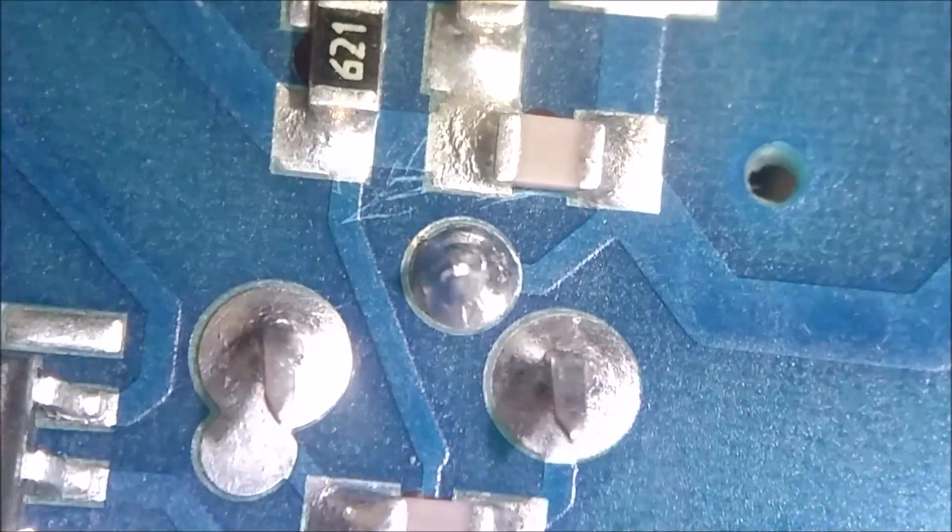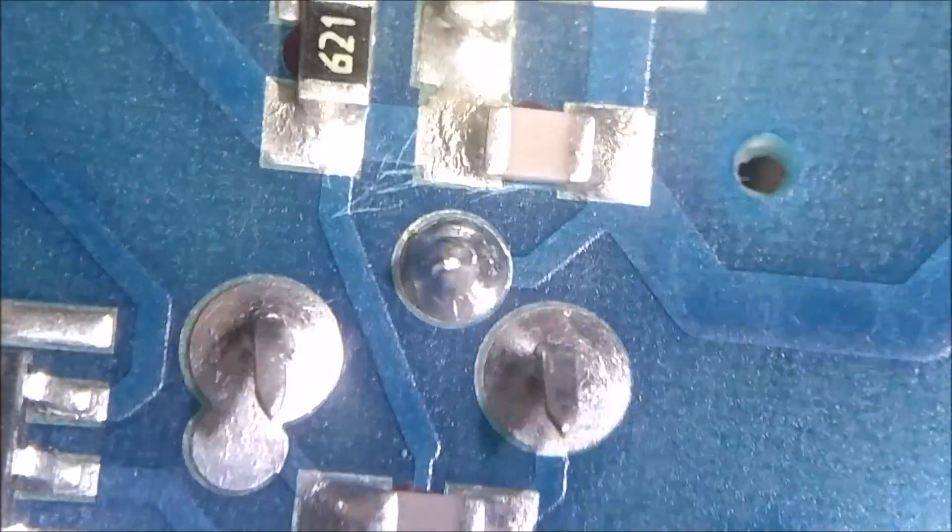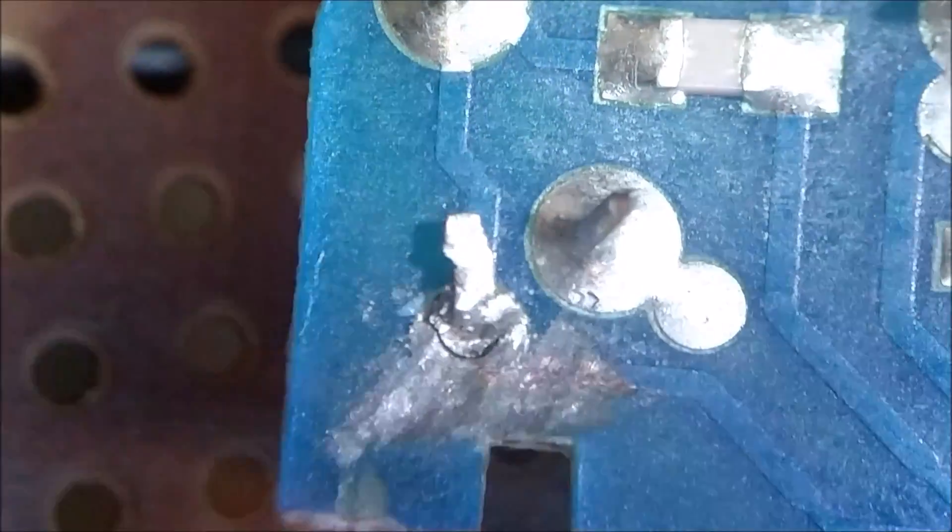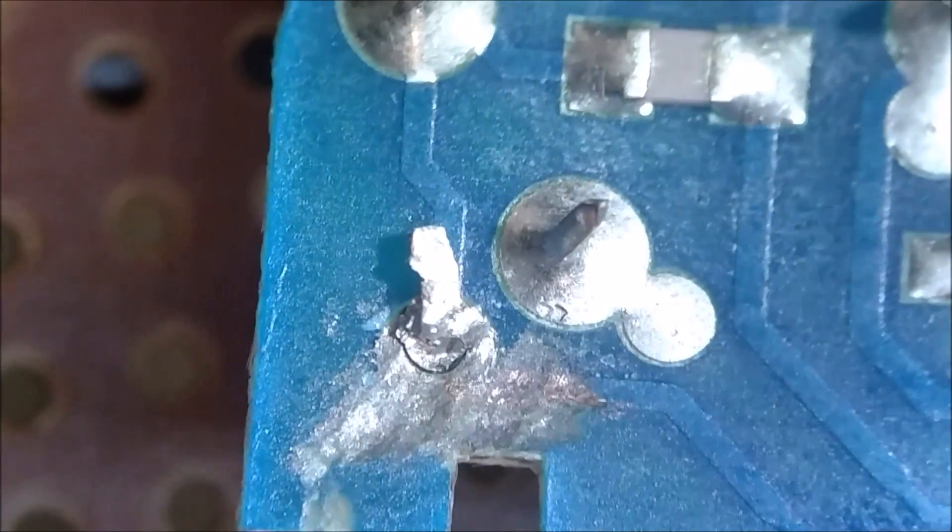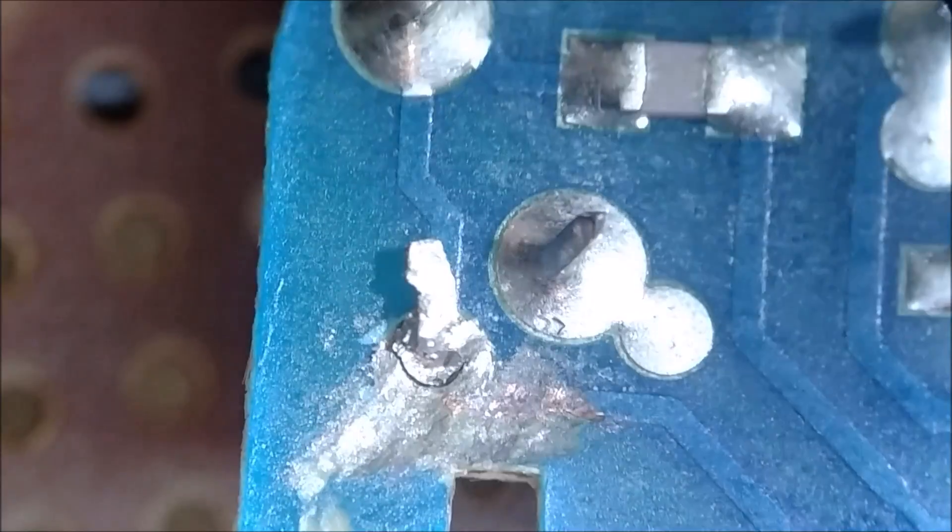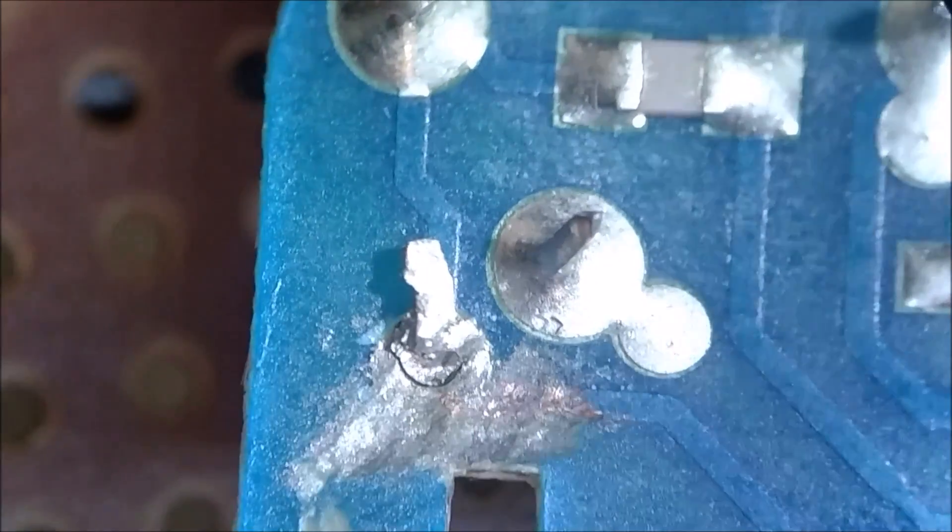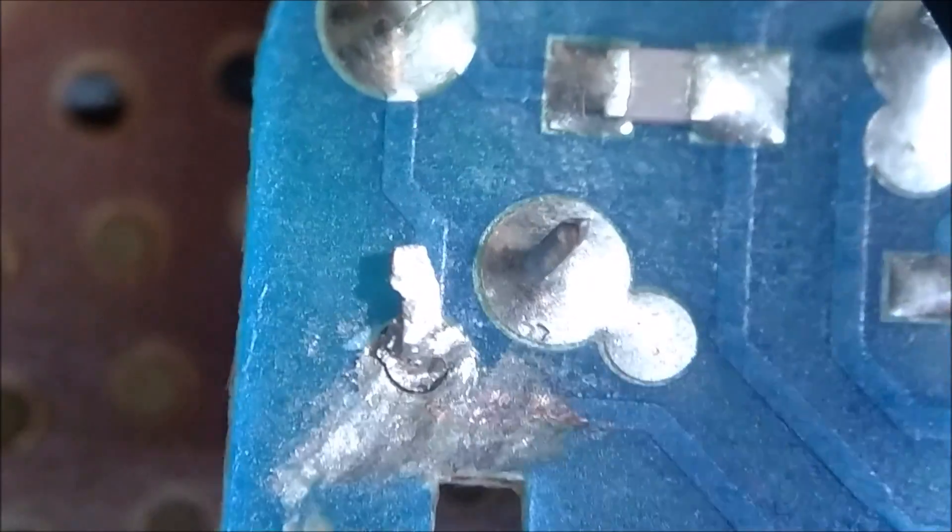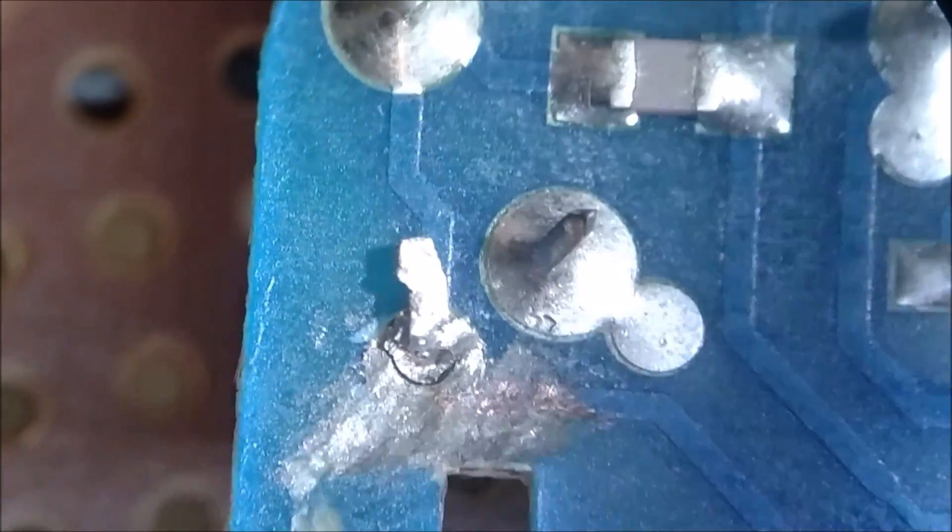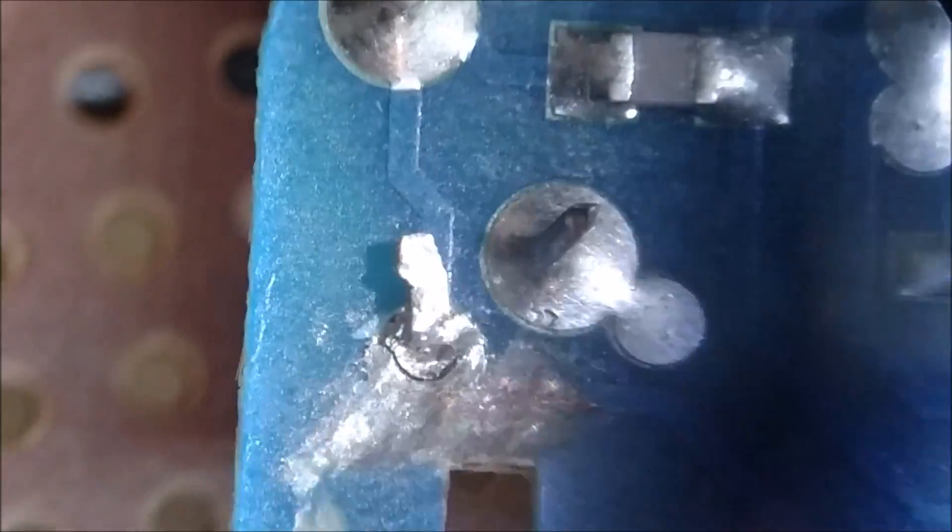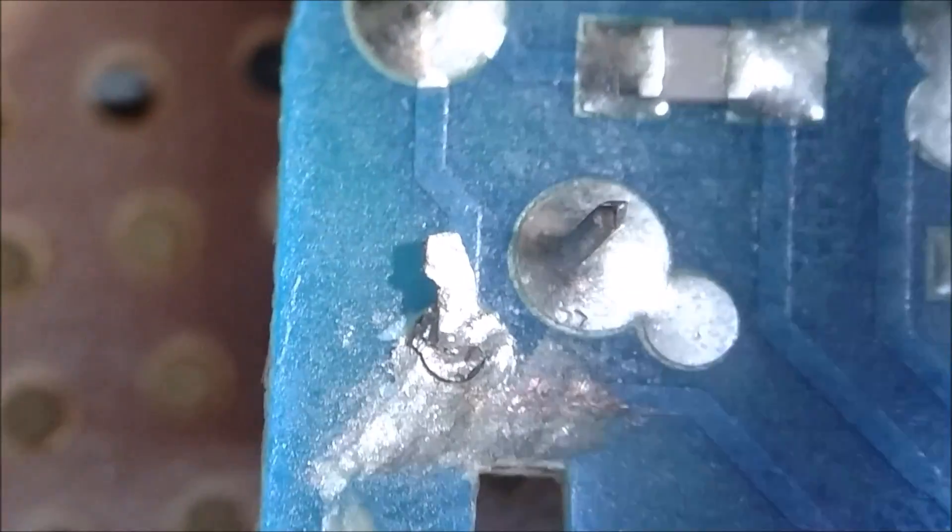Now that is a much better looking solder joint. But when I brought it over here to the microscope for an inspection, I noticed something else down here in the corner. We have another solder joint that looks bad, and this one has been damaged somehow. You can see something has abraded the circuit board and scratched away the trace there on the corner and scratched away at the solder joint itself. So I think this is the real problem.